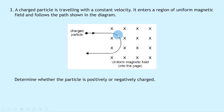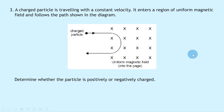At the first point, the particle is bending downwards, so there must be a force downwards. Pointing the index finger into the page for the magnetic field direction, and the thumb downwards for the force direction, the middle finger points to the right — along the tangent to the curve at that point — which represents the direction the particle is moving. This makes sense.